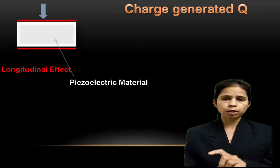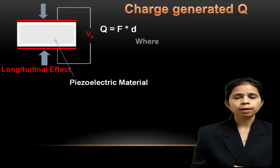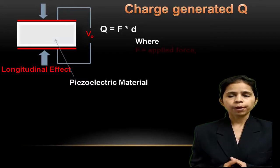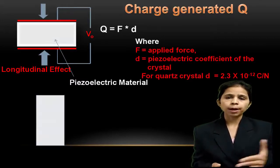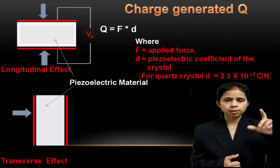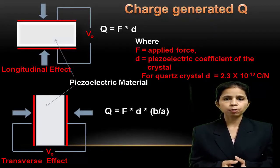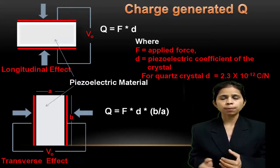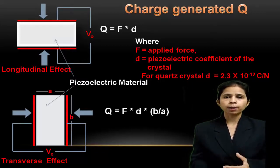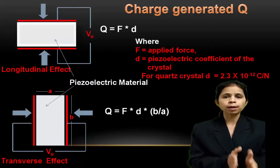If the crystal is arranged in a longitudinal direction, the amount of charge generated Q is given by Q = F × D, where F is the applied force and D is the piezoelectric coefficient of the quartz crystal. But if the crystal is arranged in transverse direction, the charge developed Q equals F × D × (B/A), where A and B are the breadth and length of the rectangle. If the ratio B/A is greater than 1, then the voltage produced in the transverse effect will be greater than the voltage produced in the longitudinal effect.